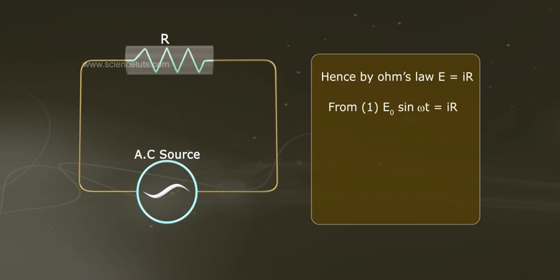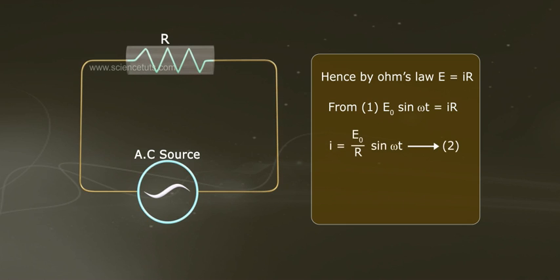From equation 1, E₀ sin ωt equals to IR. Therefore, I equals to E₀ by R sin ωt, equation 2.